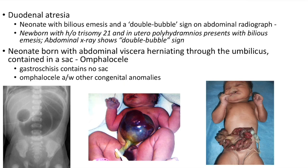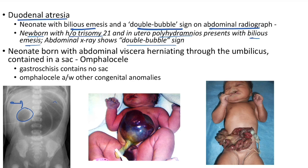Duodenal atresia presents as a neonate with bilious emesis and a double bubble sign on abdominal radiograph. Clinical case: newborn with history of trisomy 21 (Down syndrome is a risk factor for duodenal atresia) and polyhydramnios presenting with bilious emesis. Abdominal X-ray shows double bubble sign.